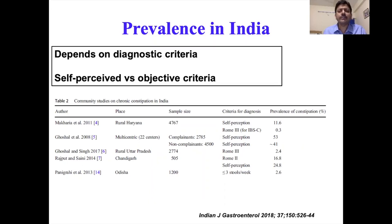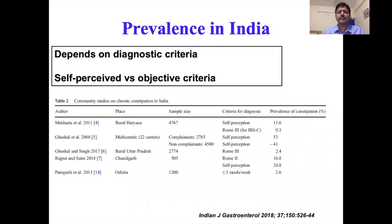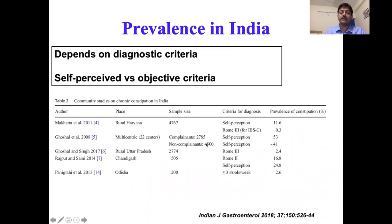Regarding the magnitude of the problem in India, several community-based studies have shown a significant prevalence of chronic constipation. The actual figure depends on how the study is done. If based on the patient's own self-perception, prevalence is higher. Using objective criteria, it comes down. In some larger studies, self-perceived constipation can approach around 50 percent.